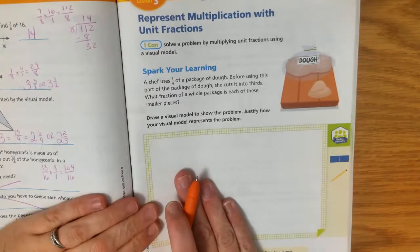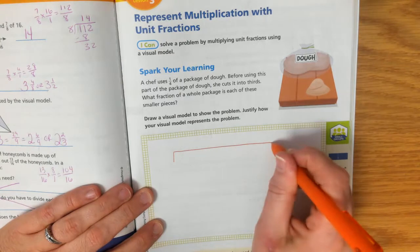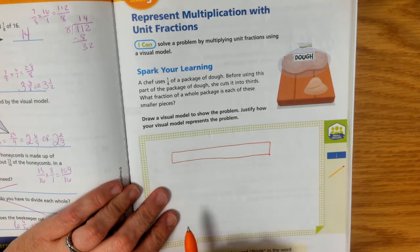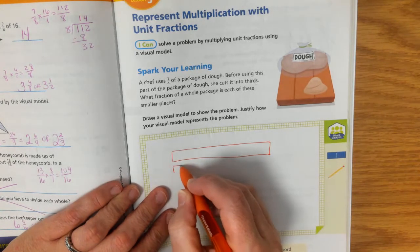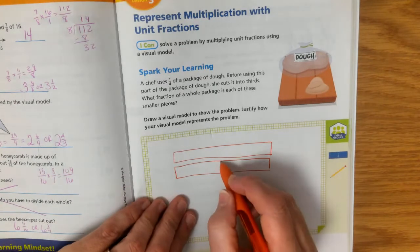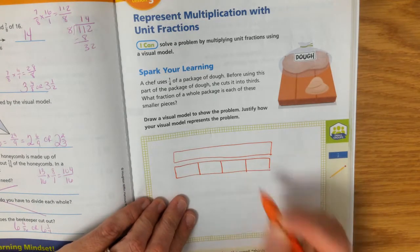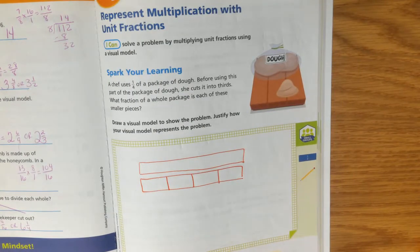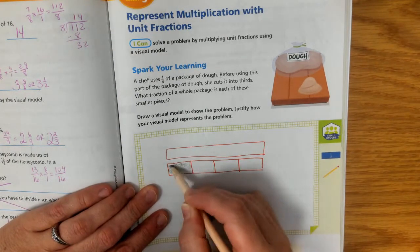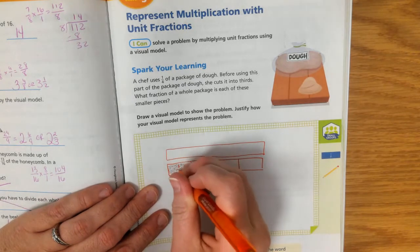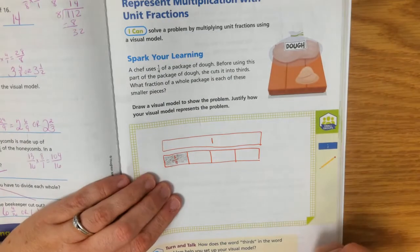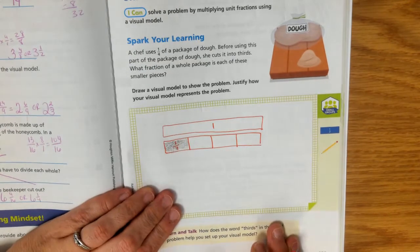Okay, so the chef has this whole package, right? So you've got a whole package here. The chef uses only one-fourth of the package. So if I take my package, I'm just drawing it again. And we're going to break up the package into fourths. Now, the chef only uses one-fourth of the package. So I'm just going to shade in how much the chef uses. So the chef uses one-fourth of the package. This is our whole package of dough. Here's the one-fourth that was used.